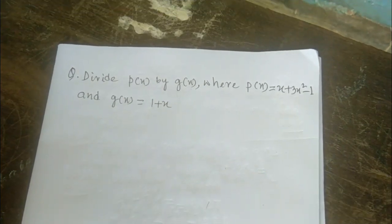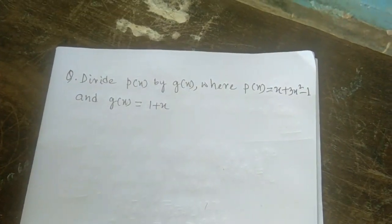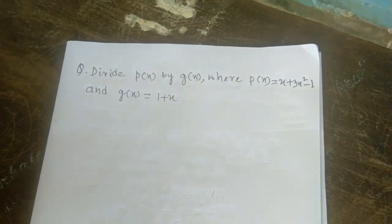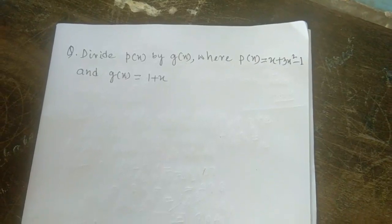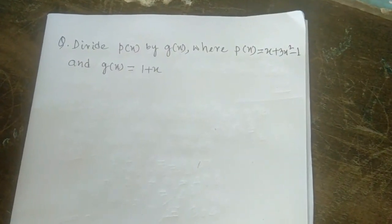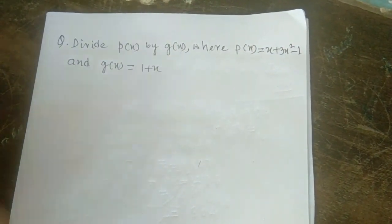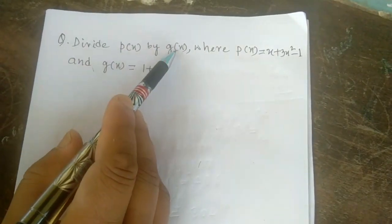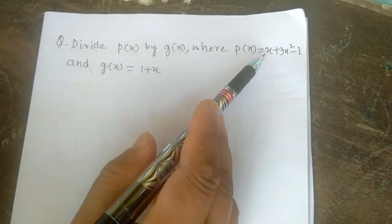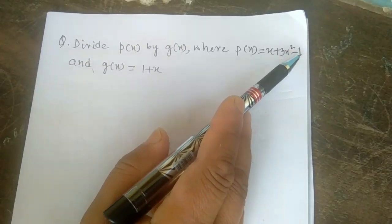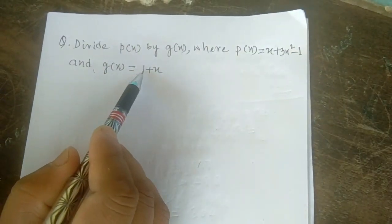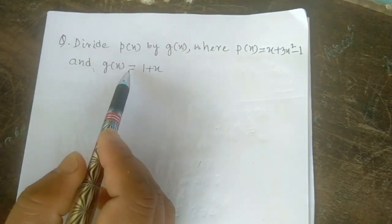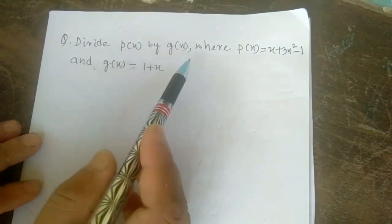Good morning. Today we are doing Class 9 Chapter 2 Polynomials. Today I'll teach you the long division method and the remainder theorem. So this first problem: divide p(x) by g(x), where p(x) = x + 3x² - 1 and g(x) = 1 + x. We have to divide p(x) by g(x) using the long division method.